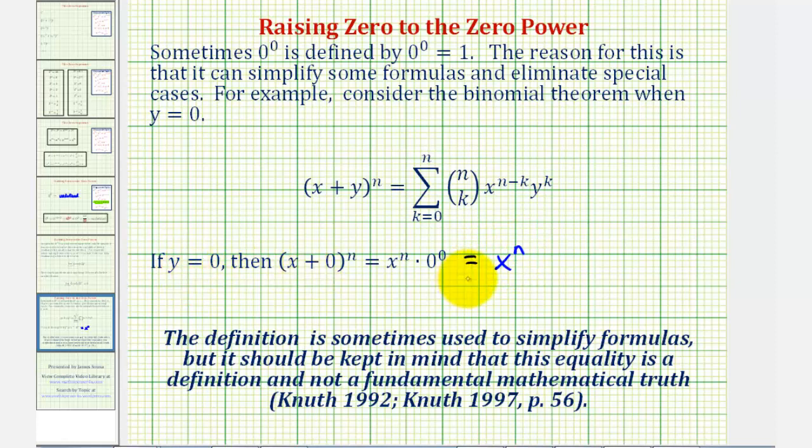So because of special cases like this, sometimes we will see zero to the power of zero being equal to positive one. Now, if you're wondering what happened to all the other terms in the binomial expansion, since y was equal to zero, each successive term would have a factor of zero raised to a non-zero power, which is equal to zero, eliminating all successive terms.